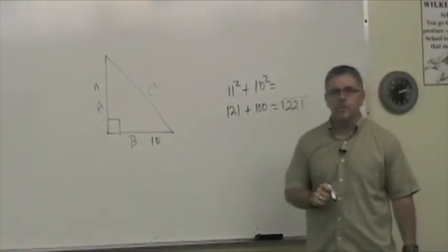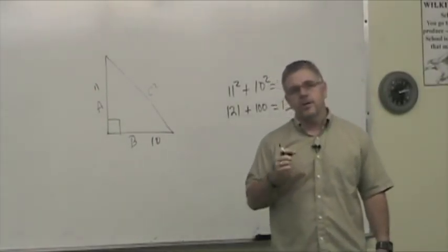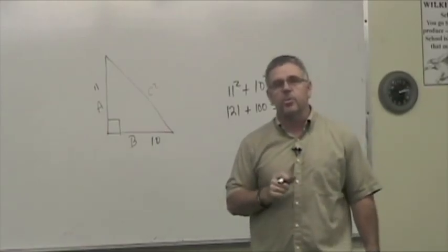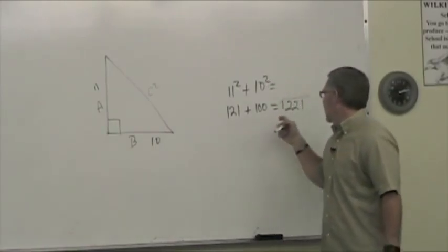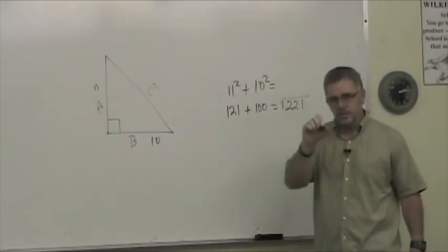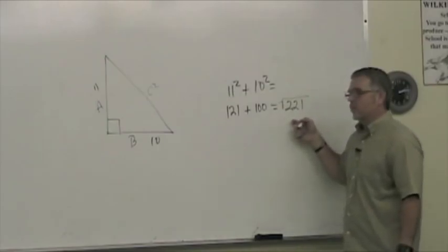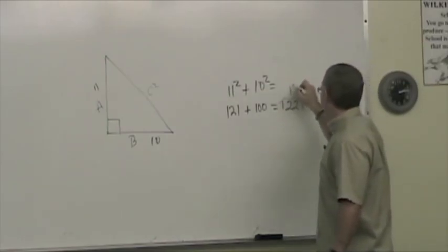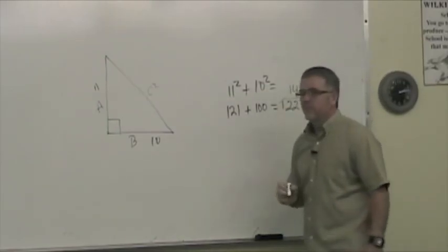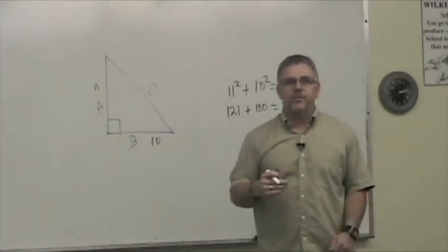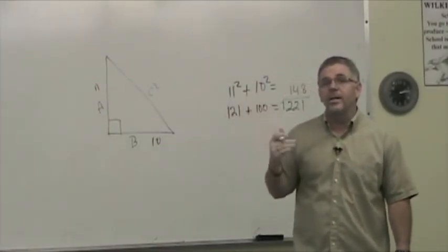Now we know that the depth of the shed this way is 11 feet and the width of the shed this way is 10 feet. So what we're going to do is I'm going to say 11 squared plus 10 squared equals, let's do the square of these first. This is 121 plus 100 equals 221.